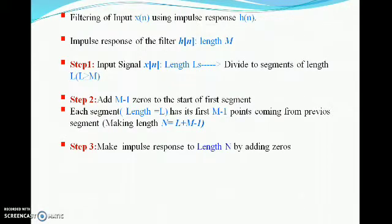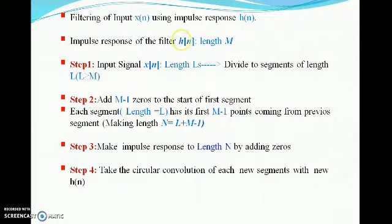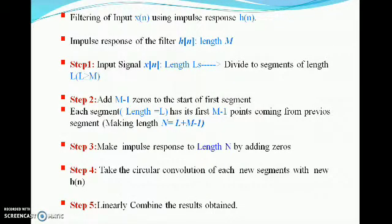In step two, I have made the length of all the segments to N, which is equal to L plus M minus 1. In step three, I am going to make the length of my impulse response h(n) to N as well. In step four, I am going to take the circular convolution of my new segments with my new h(n). In step five, which is the last step, I am going to linearly combine the results obtained. These are the five steps used for performing the overlap save method.